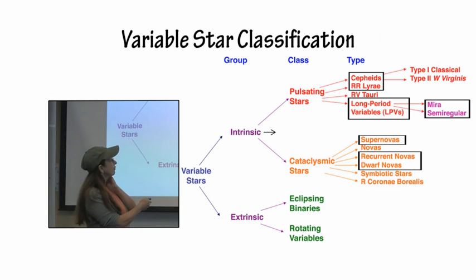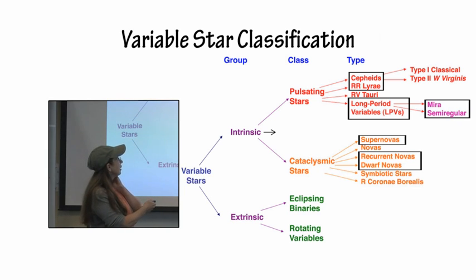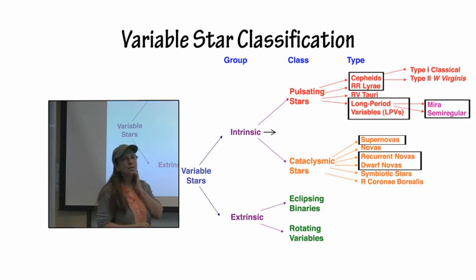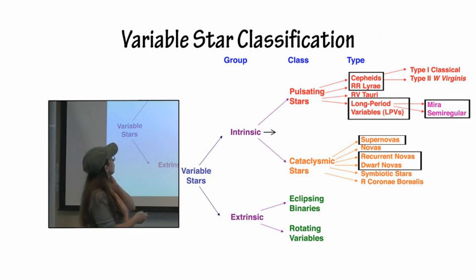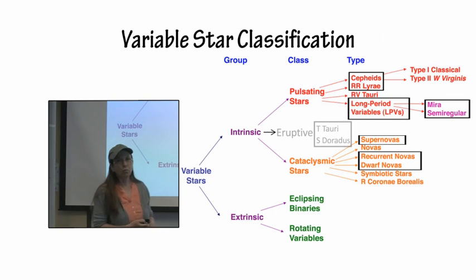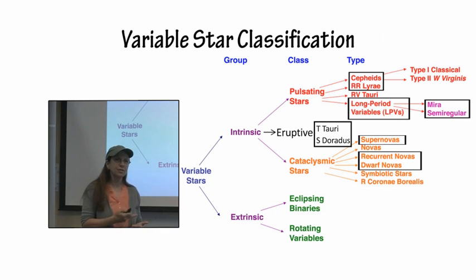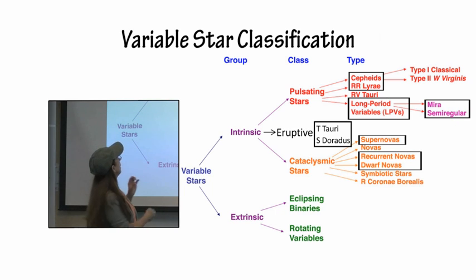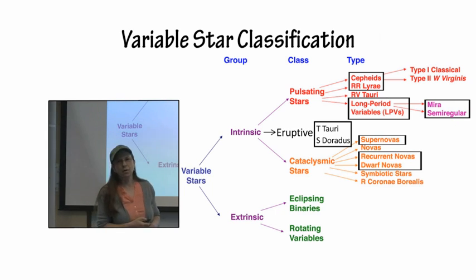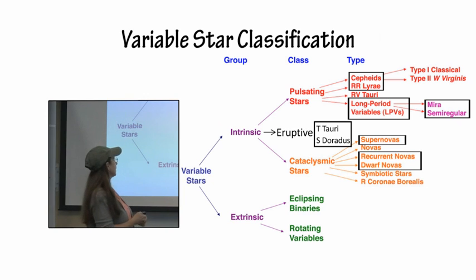Among the cataclysmic variables, supernovas are familiar from prior years, along with recurrent novas and dwarf novas. There is also one more group — the eruptive variables — including T Tauri stars and FU Orionis stars (Fuors), which are the two classes of eruptive stars on the 2014 event.